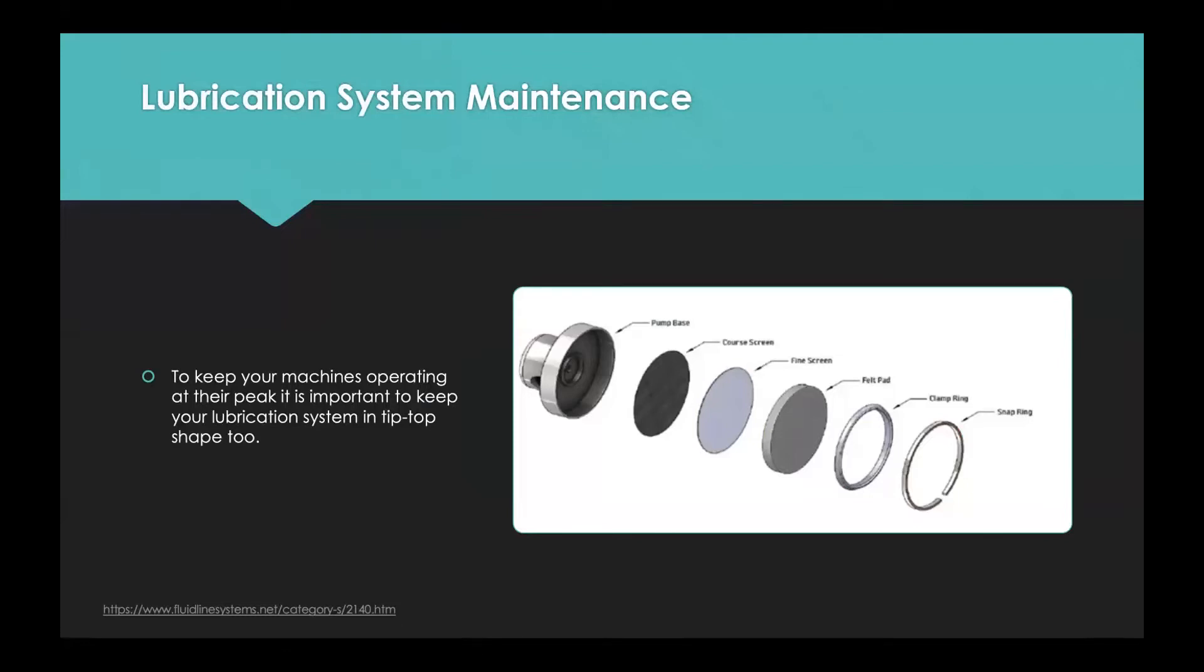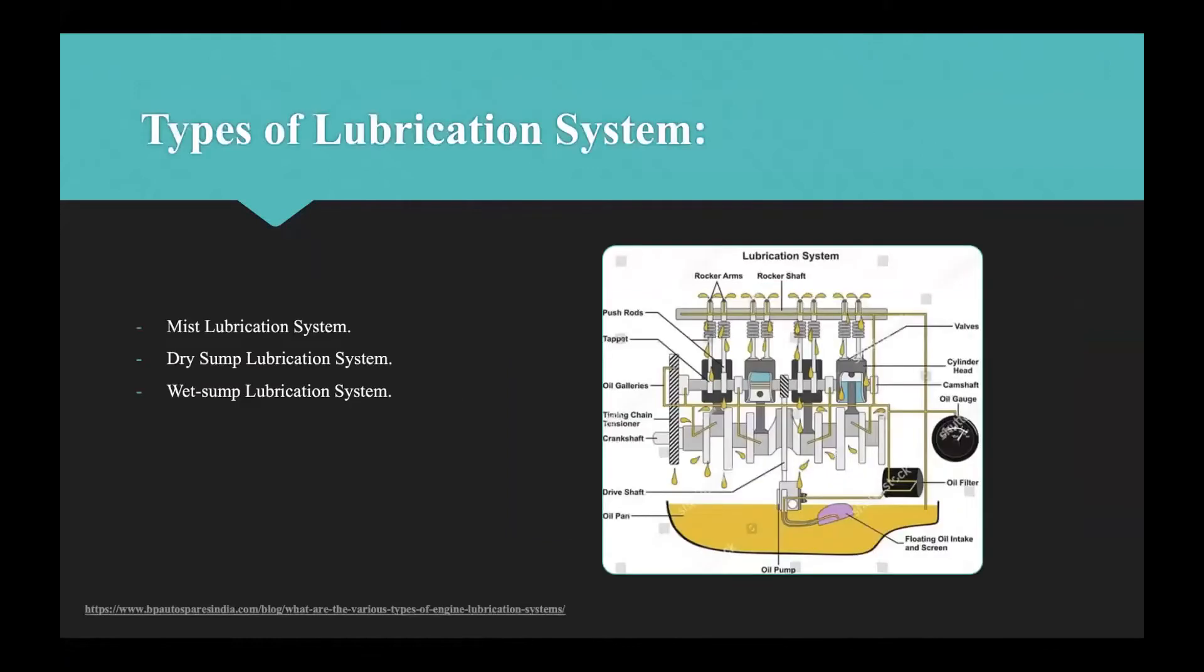For maintenance to keep the machine operating at their peak, it's important to keep the lubrication system in tip-top shape. Having a routine lubrication system maintenance program will help ensure surface problems are kept to a minimum. The maintenance checklist includes: remove and clean the strainer every month, change line filter pressure filter especially every year, check pipe for breaks, check for leaking at all connection points.